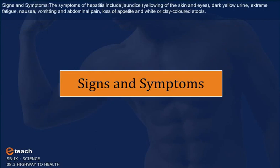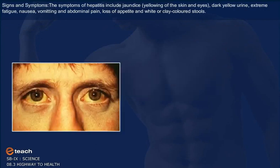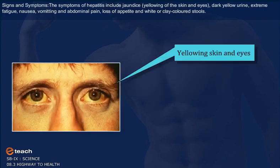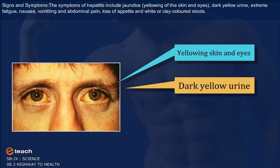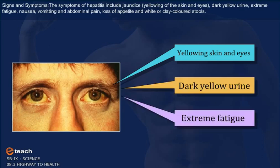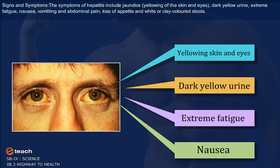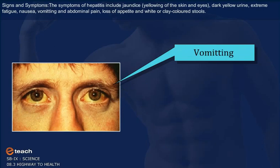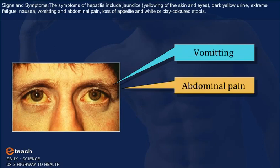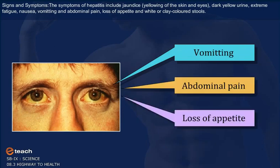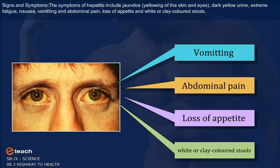Signs and Symptoms: The symptoms of hepatitis include jaundice, i.e. yellowing of the skin and eyes, dark yellow urine, extreme fatigue, nausea, vomiting and abdominal pain, loss of appetite, and white or clay-colored stools.